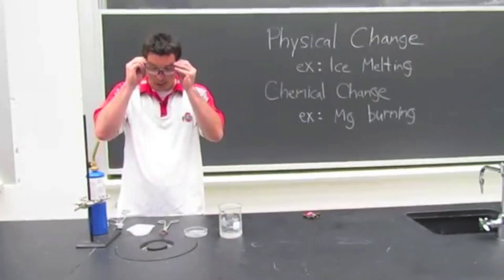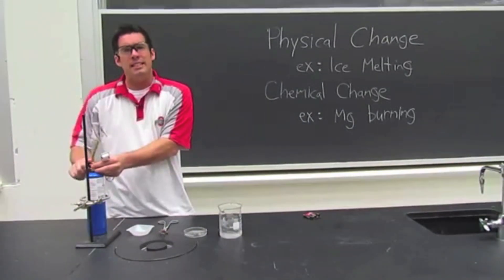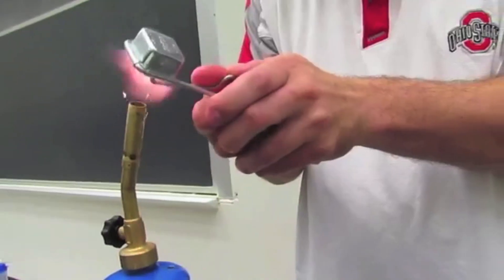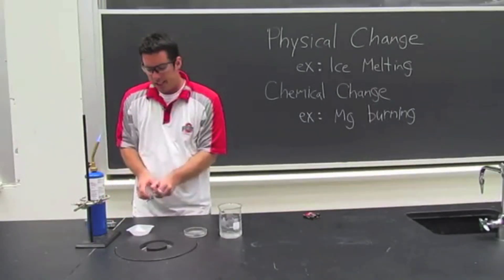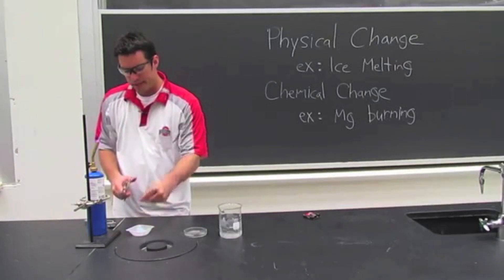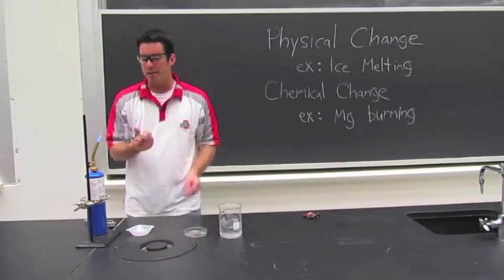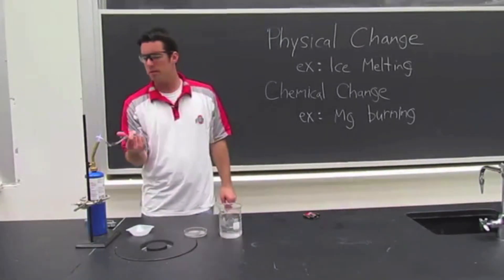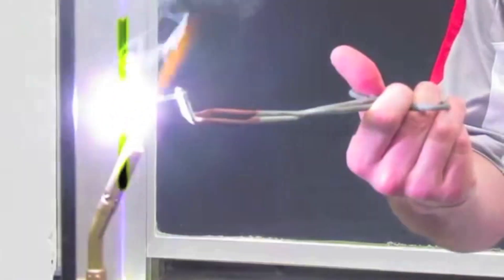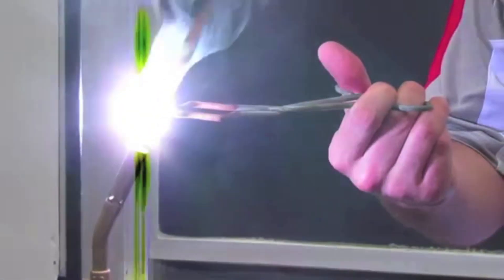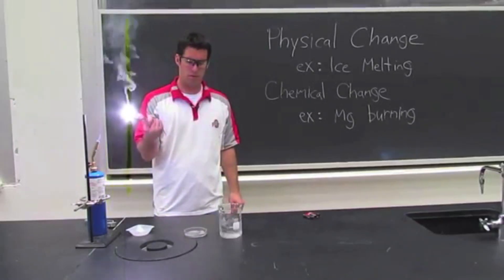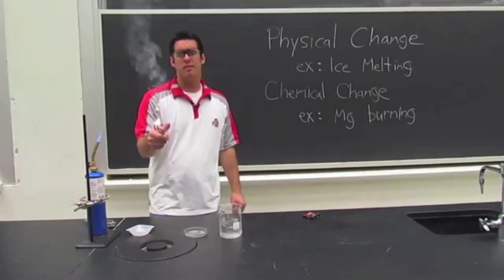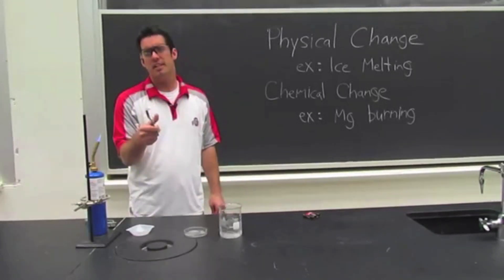The chemical change we're going to observe is magnesium being burned. If I take a strip of magnesium metal and put it in front of a flame, we can observe a very very bright vivid chemical change.